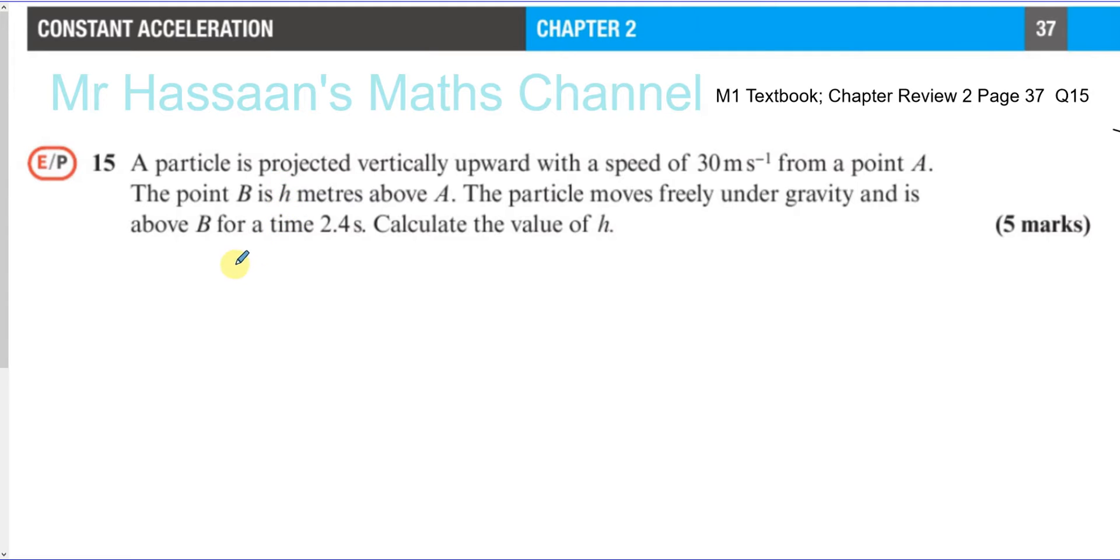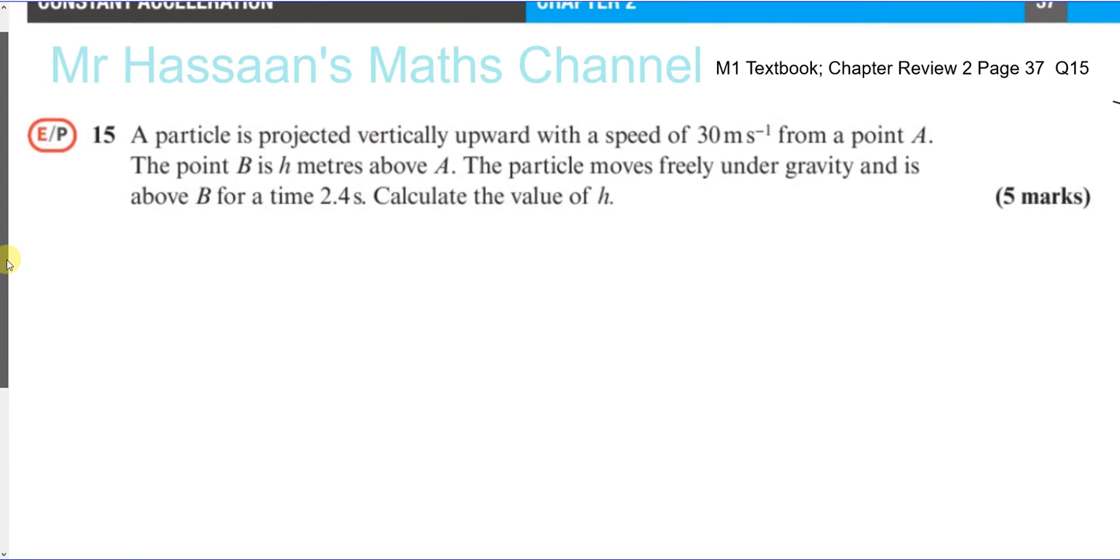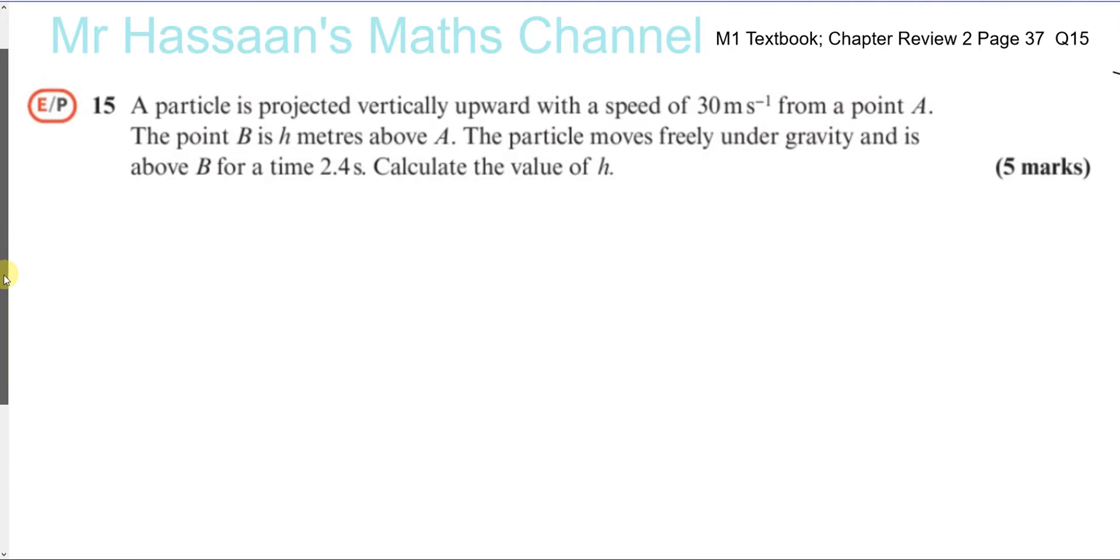I had a request to answer this question. A particle is projected vertically upwards with a speed of 30 meters per second from a point A. The point B is H meters above A. The particle moves freely under gravity and is above B for a time of 2.4 seconds. Calculate the value of H.